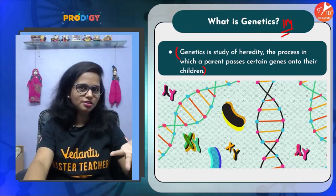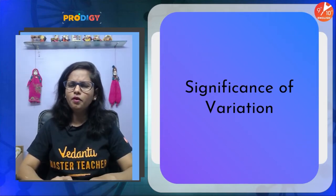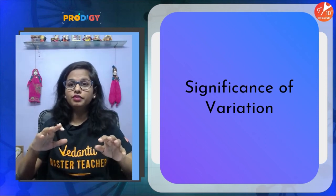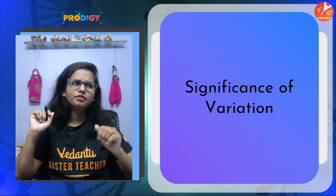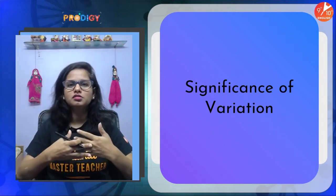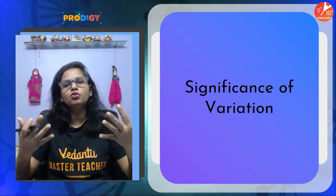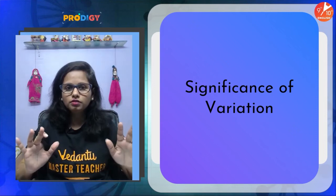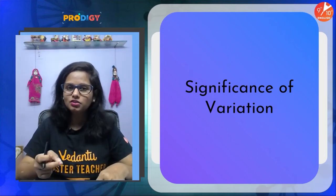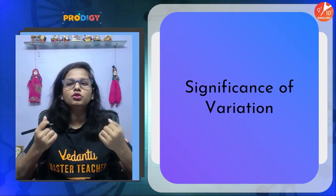Now, are variations important? Many times variations occur and sometimes they are useful, sometimes they are useless or harmful. When harmful, they may lead to certain genetic disorders and can affect that particular individual or even an entire population. For example, if an individual is born with a hole in the heart — that's not normal and would not be a survival advantage; it would be a disadvantage.